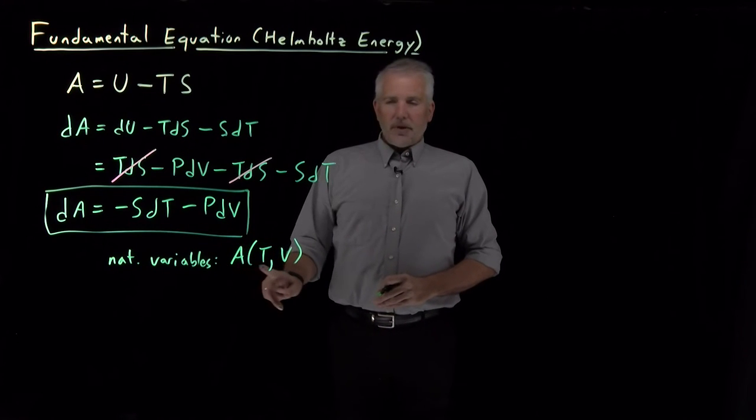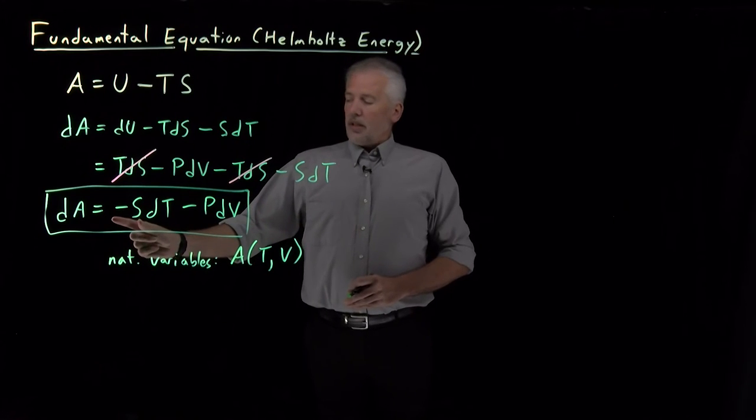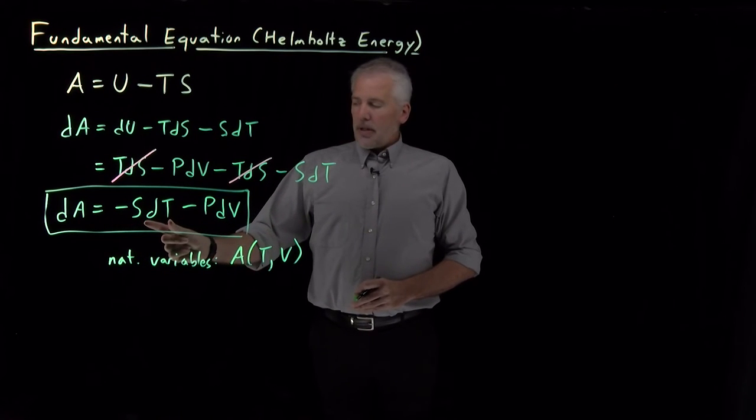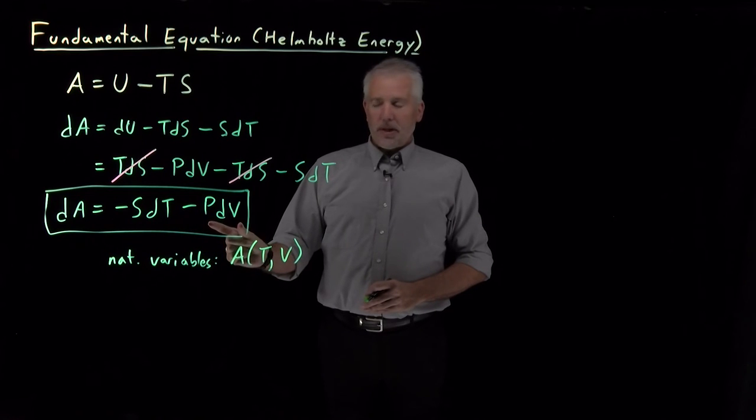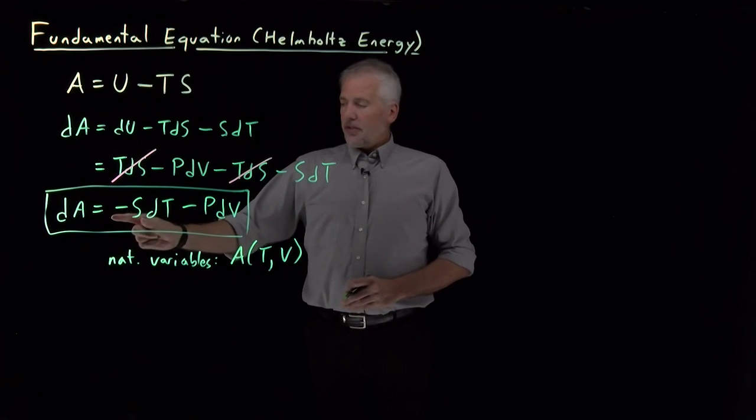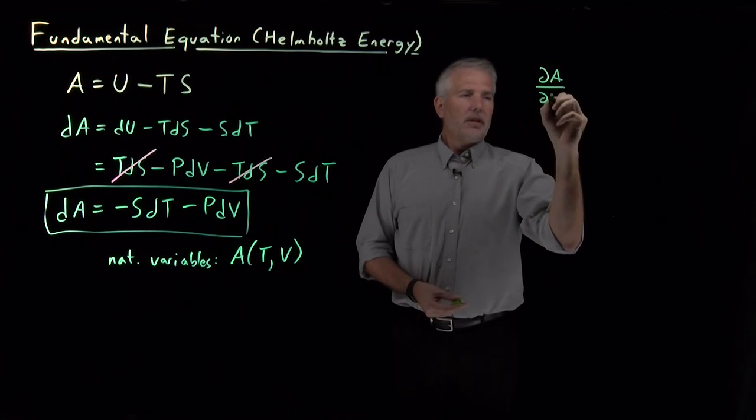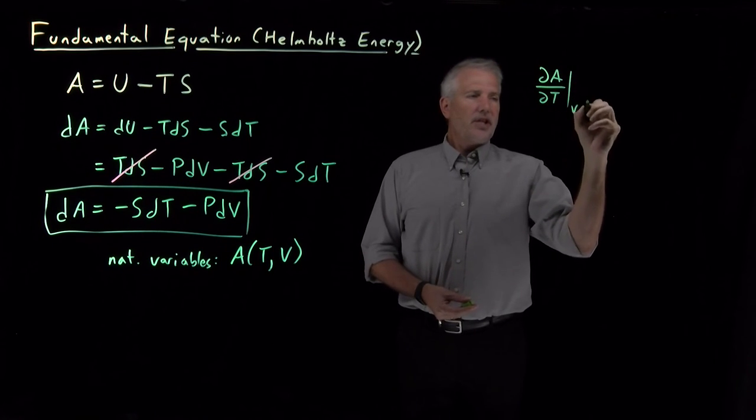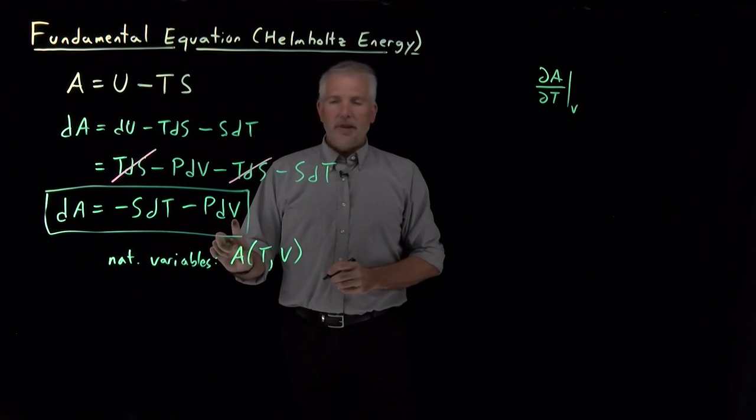Thinking of A as a function of T and V, writing dA as some coefficient multiplied by dT and some coefficient multiplied by dV, this term negative S is equal to the rate at which A changes when we change the temperature, dA/dT, when V is held constant.